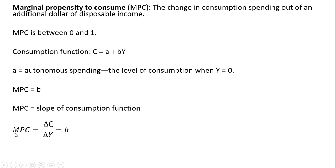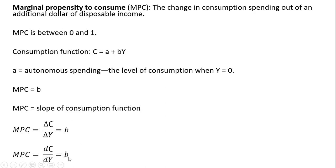In terms of slope form, you can think of it as the change in C over the change in Y — rise over run — and that will equal B. In calculus, if you take the derivative of the consumption function, you'll get back the marginal propensity to consume, B.